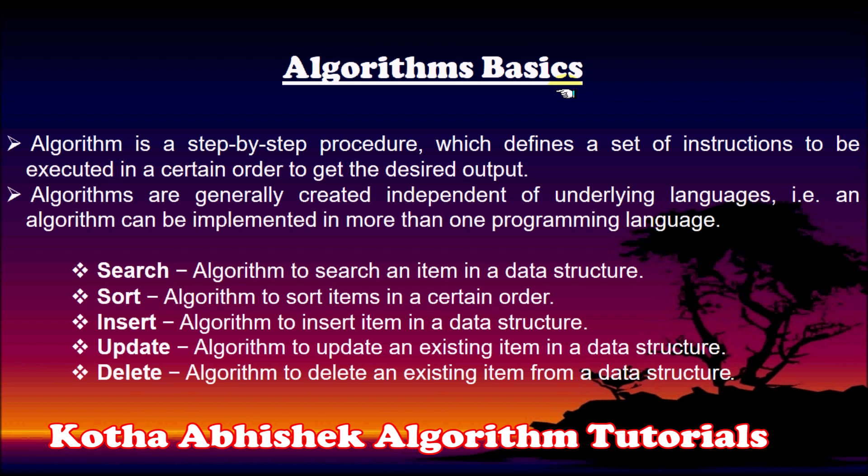So we have different types of algorithms. We will cover five important points. The first one is search algorithms. For example, we have a list with 100 elements — you can search for any element. So we can use search algorithms. The first point: search algorithm is used to search an item in a data structure.